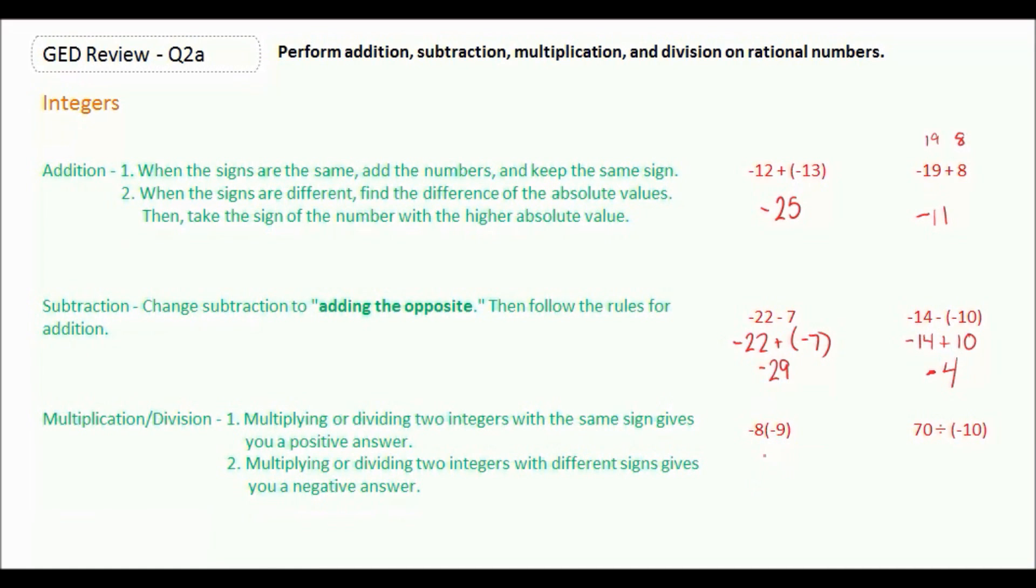Negative 8 times negative 9: they have the same sign, so it's going to be positive 72. 70 divided by negative 10: they have different signs, so the answer is negative 7.